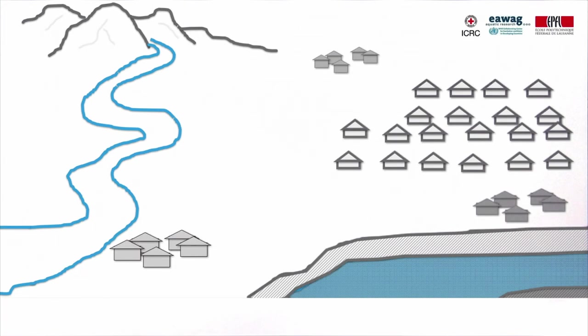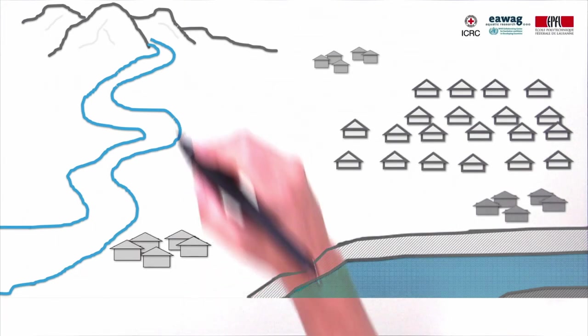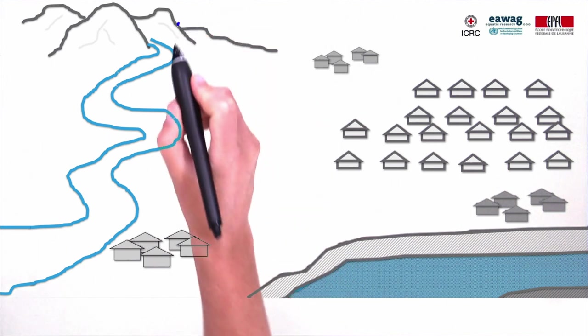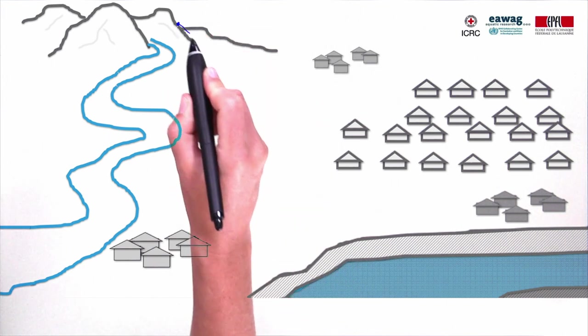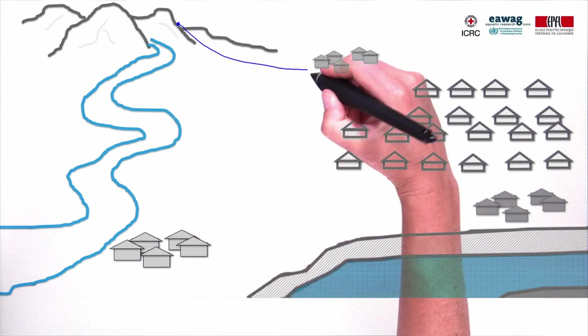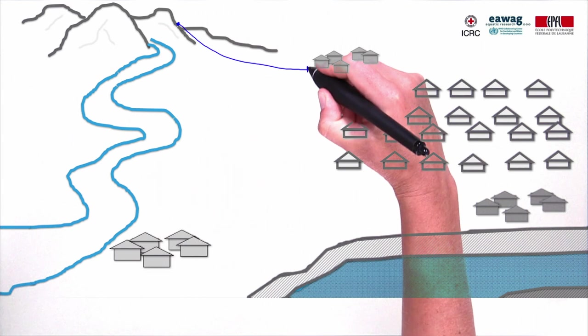What is a water supply system? Let's see. There is a pure spring in the mountains. We protect it and deliver water by gravity to the village nearby, where it can be collected at the standpipe.